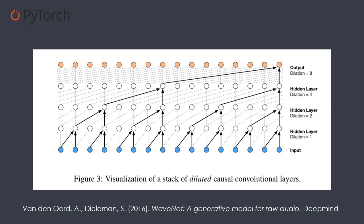As a side note, WaveNet uses a 1D convolution with only one dimension. We have one convolution and will stack 1D convolutions, but we could also have multiple channels — it would not change anything, it remains a one-dimension convolution.